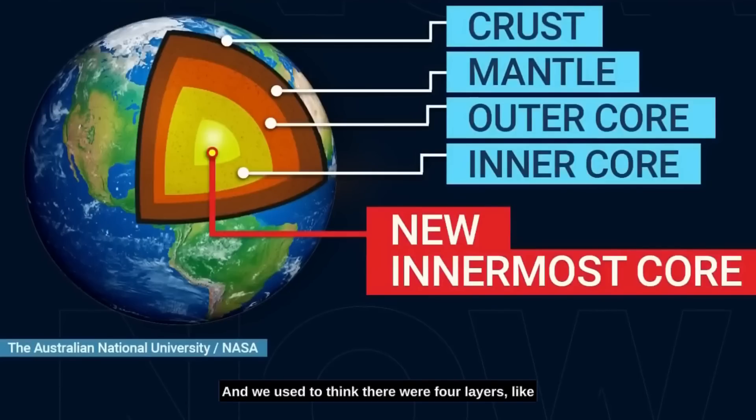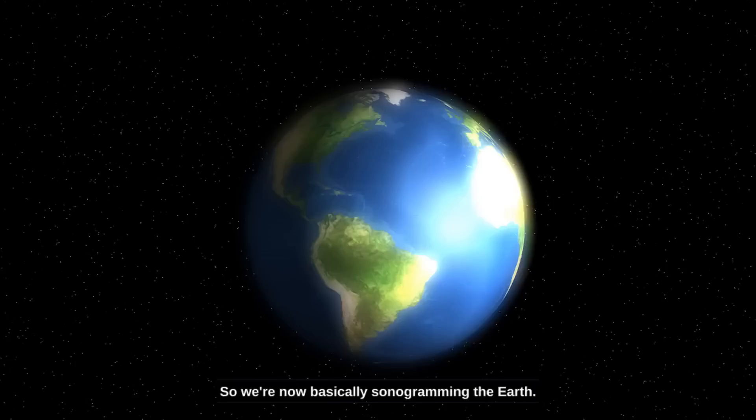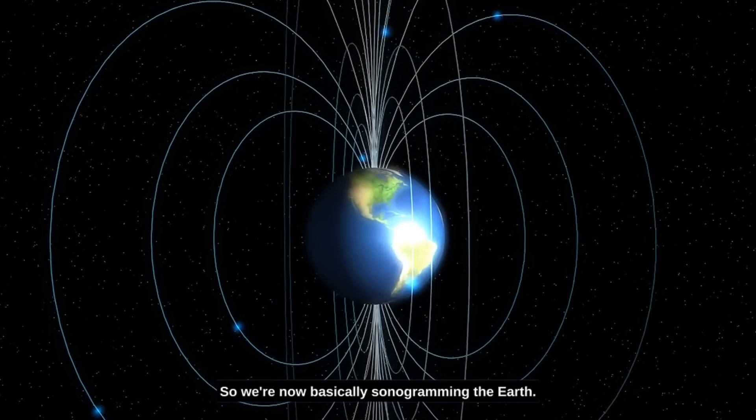And we used to think there were four layers, like the crust and the mantle, four layers inside the Earth. Recently, we picked up evidence of a fifth, a fifth layer at the very center of the Earth. So we're now basically sonogramming the Earth.